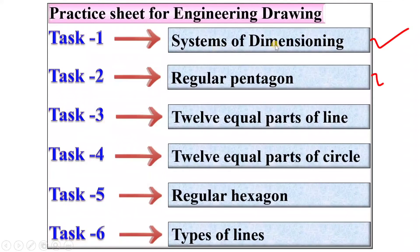In the last video we have discussed system of dimensioning, regular pentagon, 12 equal parts of line, 12 equal parts of circle. Now it's done for the regular hexagon.